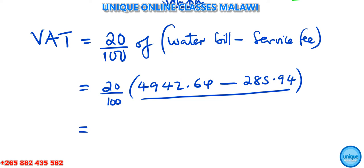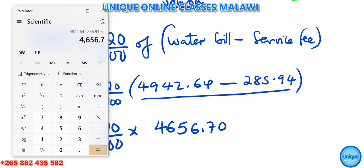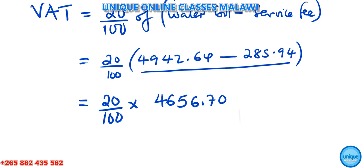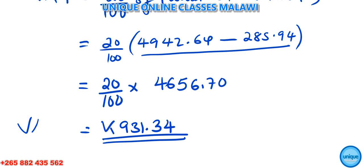So we have 4,656.70. We need to find 20% of this value. So we have 20 over 100 of 4,656.70. From my calculator, dividing by 100, the answer is 931.34. So the VAT is 931.34.